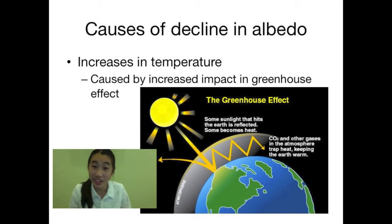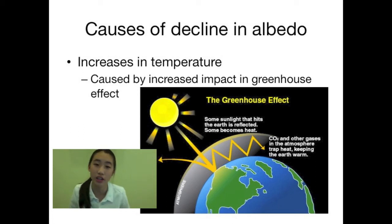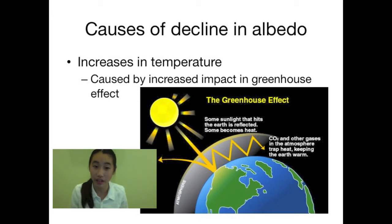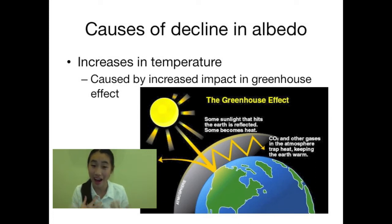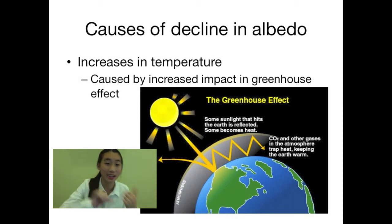One of the causes is increase in temperature. The increase in temperature is caused by the increased impact of the greenhouse effect. Due to industrialization, several greenhouse gases have been created and spread into the Earth's atmosphere. The greenhouse effect traps more heat in, which increases the temperature on Earth, and the increase in temperature melts the ice and the snow.